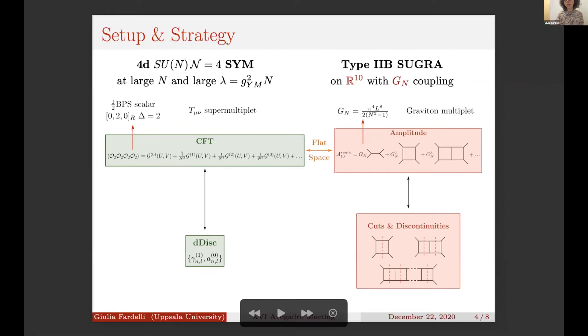The operators that we are considering are BPS scalar operators which are protected with dimension Δ=2 and transforming in this way under R-symmetry. We care about this operator because it is the super primary of the stress tensor multiplet, which is dual to the graviton multiplet on the gravity side.